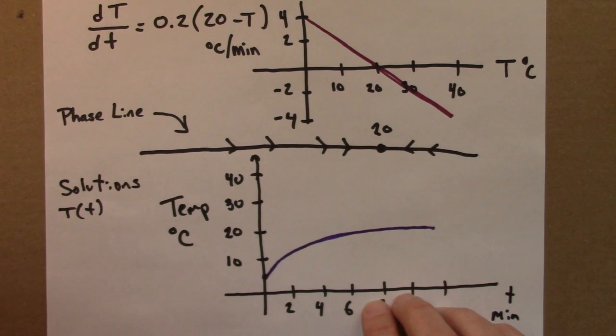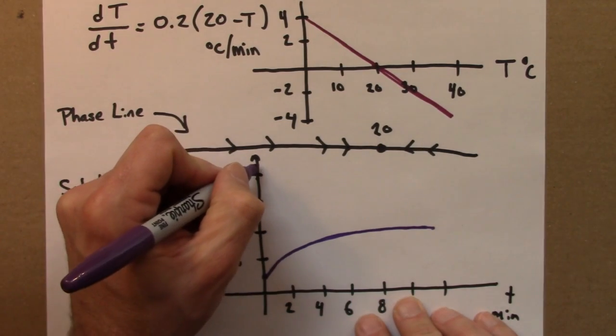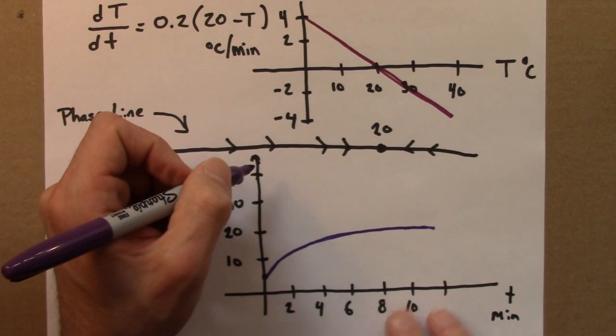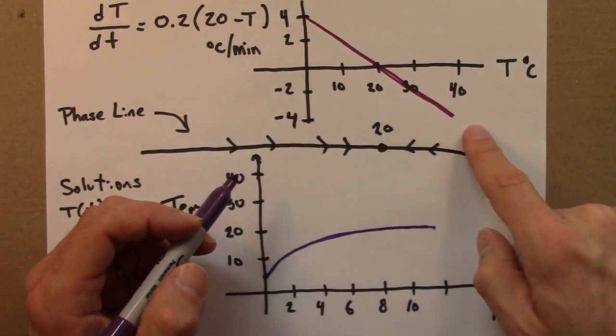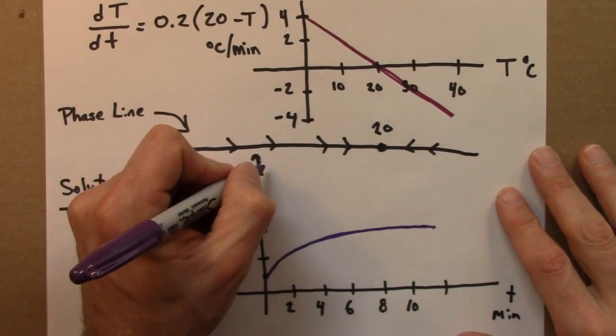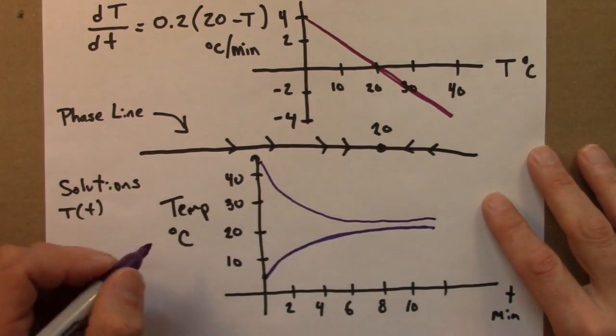I could do another solution. Suppose we started with a different beverage at, say, 45 degrees. Then I would cool off very rapidly. This is very large and negative, so I'm losing temperature quickly. And this might look something like that.